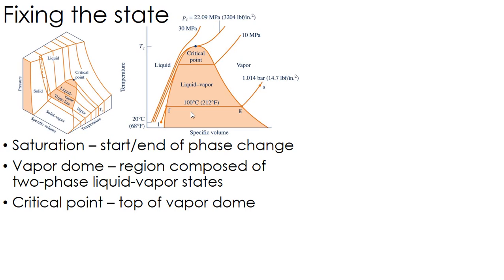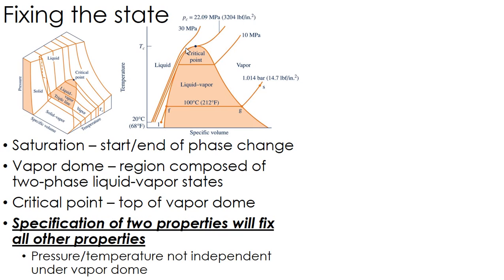We have something called a critical point, which is basically the top of that vapor dome. So at the critical point, essentially, there is no - it goes immediately from a saturated liquid to a saturated vapor. There's no boiling off. It just kind of goes from one state to the next state immediately. There's no point in between.